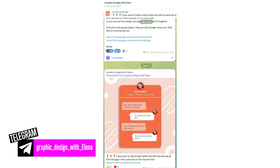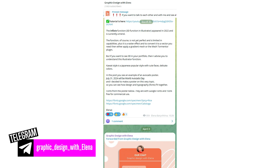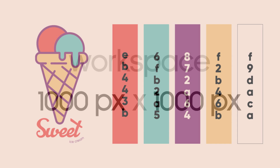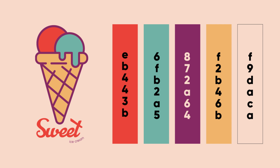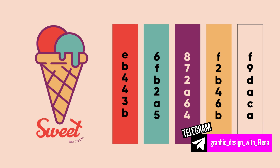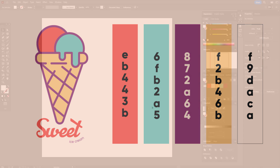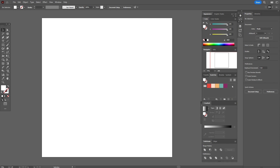Now let's start to draw the logotype in Adobe Illustrator. This is my workspace and these are the colors I'm going to use in this tutorial. You will also find colors and fonts in my PDF file on my Telegram channel, as well as a link to fonts below this video. My workspace and colors are ready.